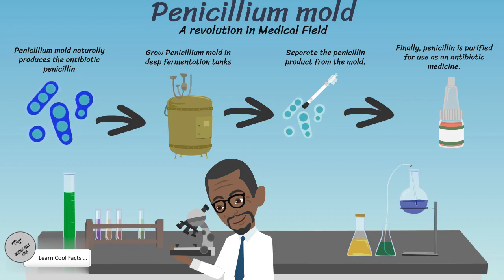There are three steps in penicillin production. Step 1: grow Penicillium mold in deep fermentation tanks. Step 2: separate the penicillin product from the mold. Step 3: penicillin is purified for use as an antibiotic medicine.